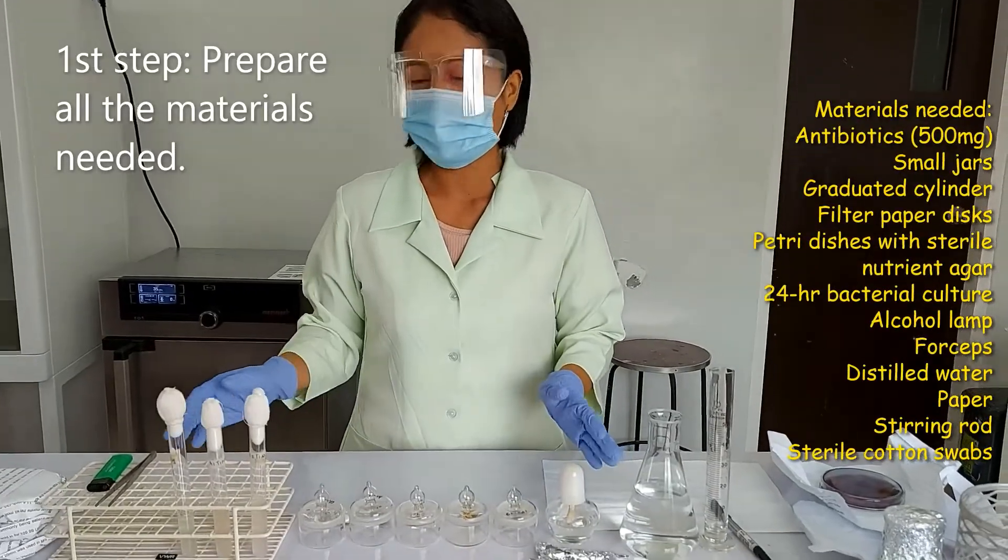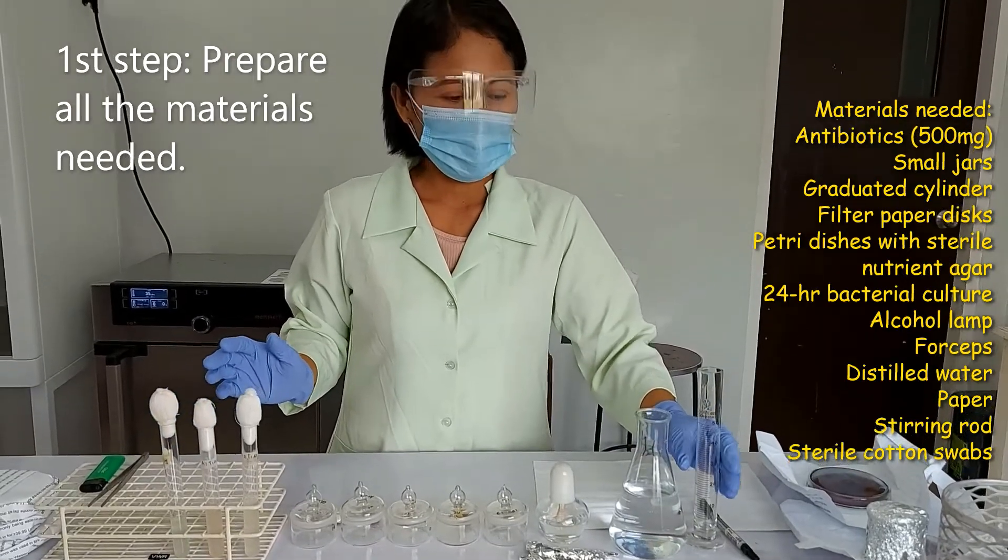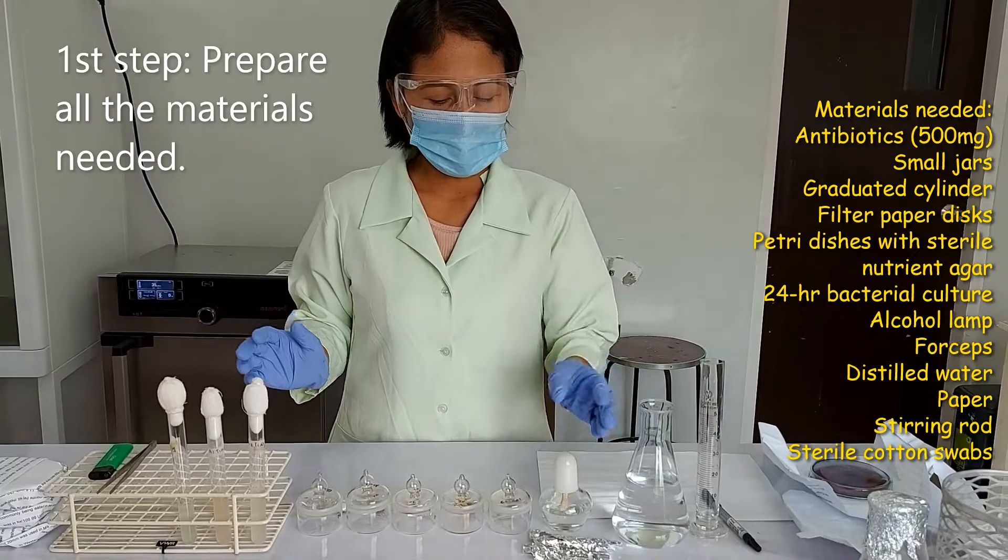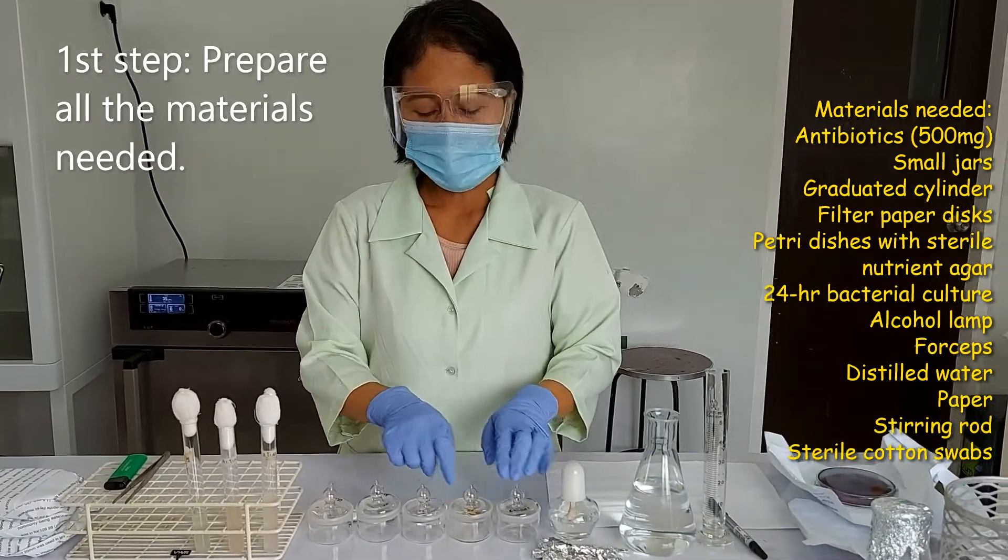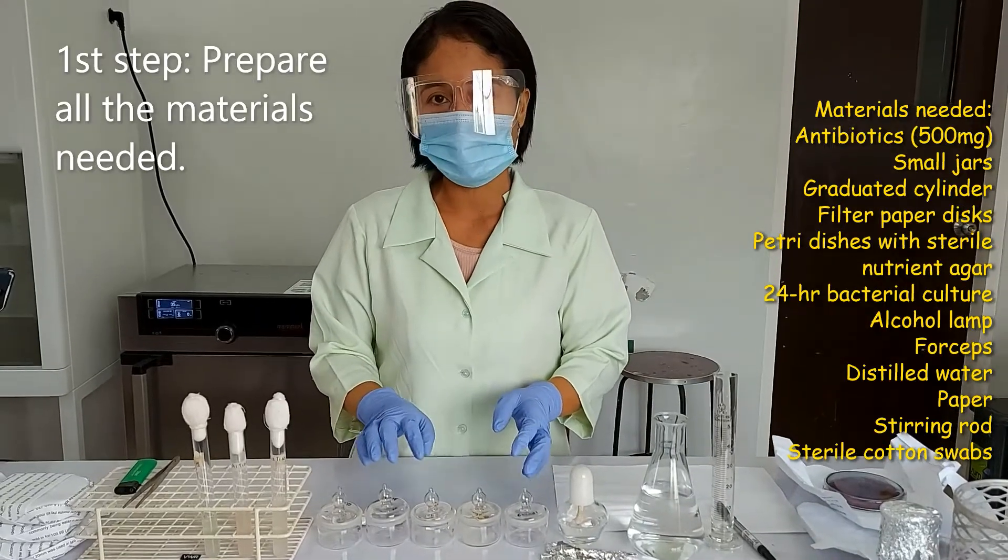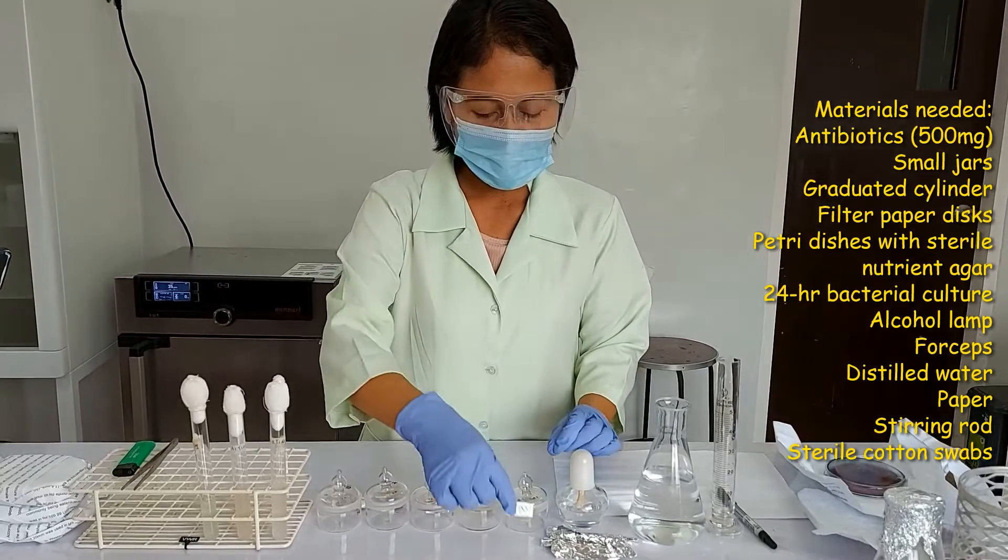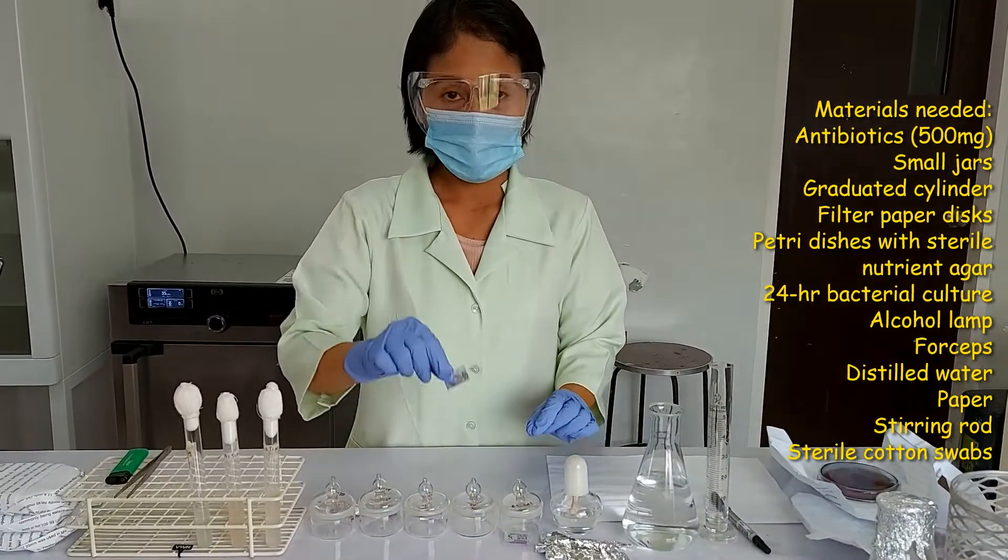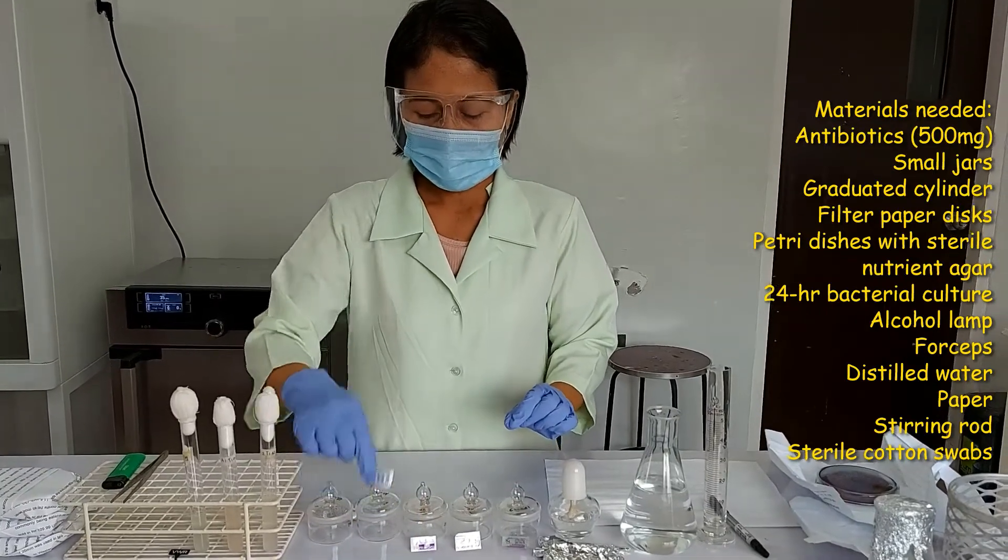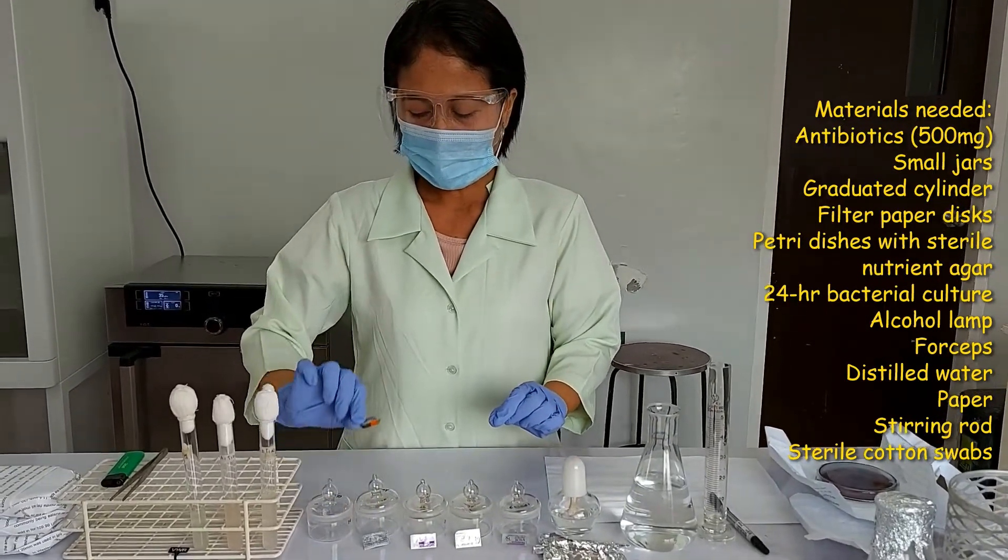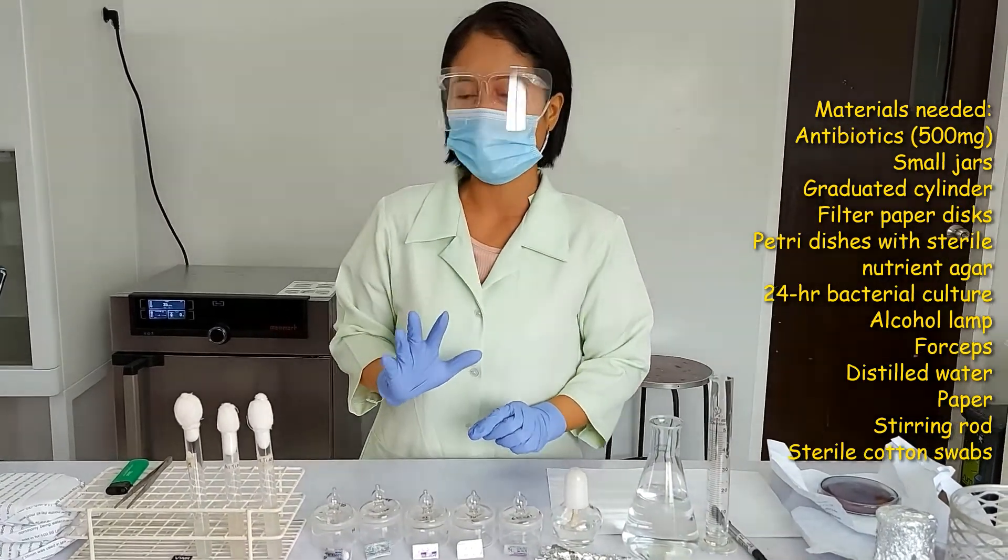These are the things that we need. I have in here the graduated cylinder, distilled water, an alcohol lamp, cotton swabs, the small jars for our antibiotics, and the antibiotics that we are going to test. We have here the clindamycin, cotrimoxazole, cefalexin, amoxicillin, and cloxacillin. So we are going to test today 5 antibiotics.